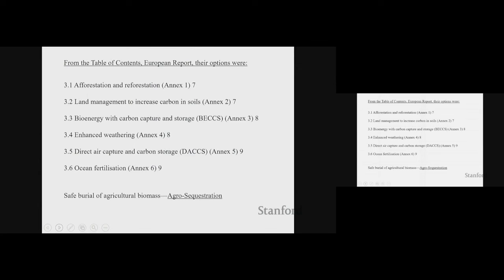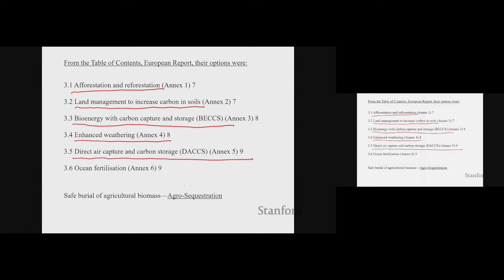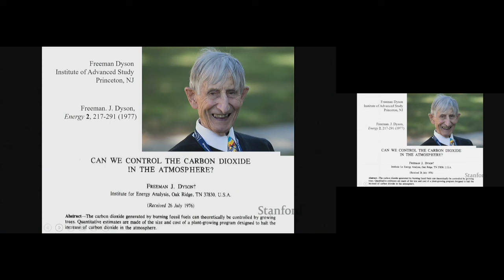The European report recognizes this as a problem and suggests six ways of doing it: manipulating forests, land management, convincing farmers to farm differently, burning biomass and capturing the CO2, using rocks that absorb CO2, and direct air capture and storage at $1,000 a ton, and fertilizing the ocean. Some of these are viable. But there's one very important thing they're missing — the safe burial of agricultural biomass — which is rather surprising.